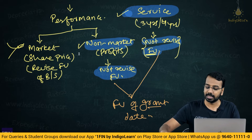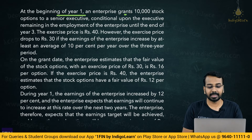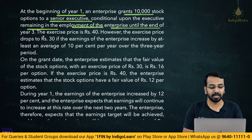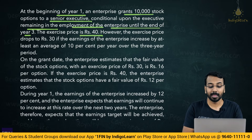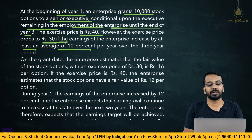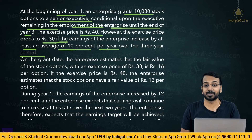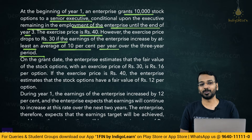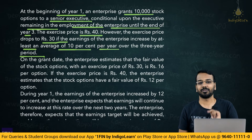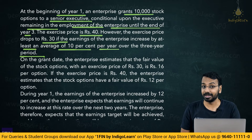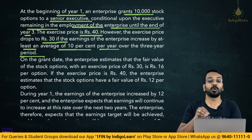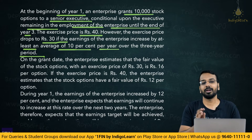Let us look at the question. At the beginning of year 1, an enterprise grants 10,000 stock options to a senior executive, conditional upon the executive remaining in employment until the end of 3 years — a 3-year service condition. The exercise price is ₹40. However, the exercise price drops to ₹30 if the earnings of the enterprise increase by at least an average of 10% per year over the 3-year period.